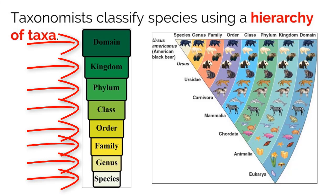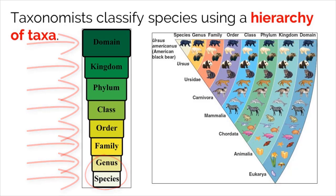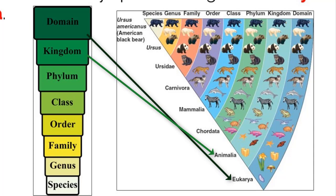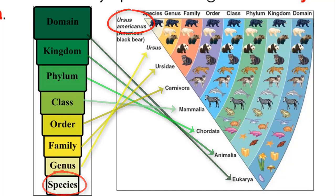Once an organism is classified, how do they create the scientific name? They use the genus and species names from the most specific levels. Let's look at this sample, which shows the classification of Ursus americanus. Starting with the broadest classification, the American black bear is in the eukarya domain. Then it moves down to be classified in the animal kingdom. The phylum is Chordata, the class is Mammalia, order is Carnivora, family is Ursidae, genus is Ursus, and species is Ursus americanus.